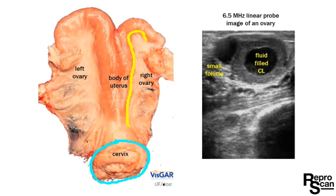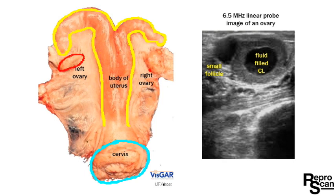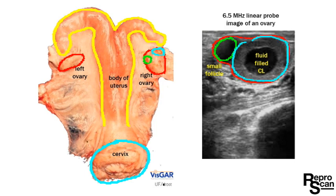We've circled the cervix in blue and outlined the uterus, including the horns, in yellow. There's the left ovary and right ovary, corresponding to the 6.5 image on the right. The follicles are circled in green and the hollow fluid-filled CL in blue.